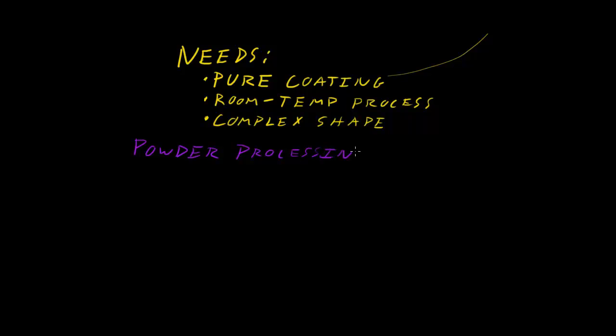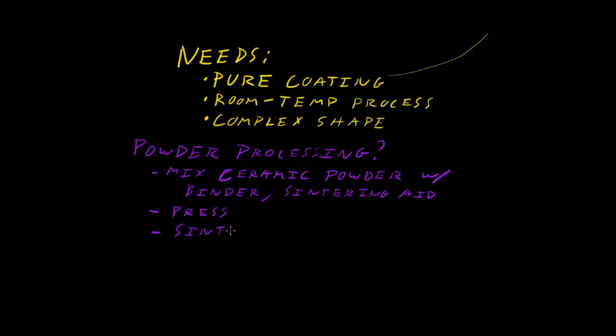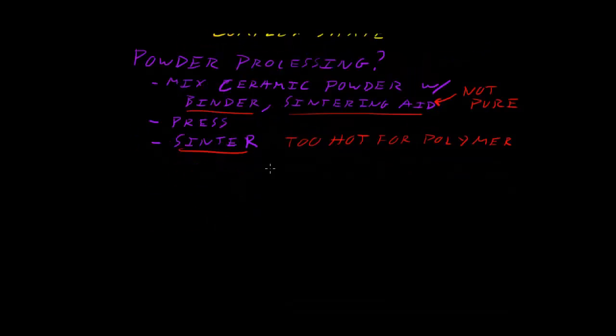So, powder processing. Can we use that? Well, powder processing is usually taking a mix of a powdered ceramic that you want to coat with, mixing it with some binder to help your green compact stay together, and some sintering aid to help the particles sinter together when you bring it to higher temperature. You press all this together, and then you sinter it in order to bond, or to get all the powders to stick together. Unfortunately, binder, sintering aid, that's not pure. And sintering is way too high of a temperature for your polymer to survive. So, powder processing is out.